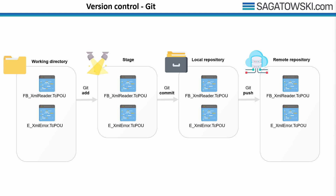In your working directory, every project file can be in three possible states: staged (changes are marked to be committed but not yet committed), modified (changes are not yet stored in the local repository), or committed (changes are safely stored in the local repository). A 'git pull' incorporates changes that someone else might have done in the remote repository into the current branch. If you've made changes while the remote repository was also changed, this can result in something called a merge conflict.